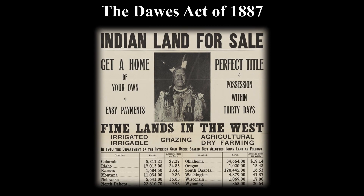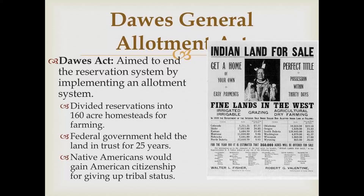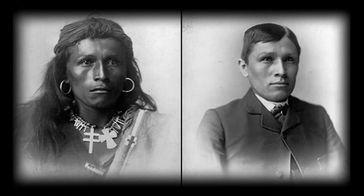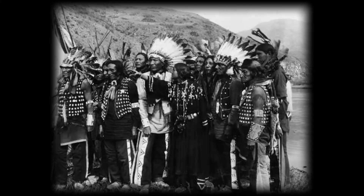For legislation, the Dawes Act occurred. In short, the government broke up and sold tribal land to the highest bidder, giving citizenship to Natives in exchange. They did this to break up Native American culture and to assimilate them. This would have a catastrophic effect on Native Americans forever.